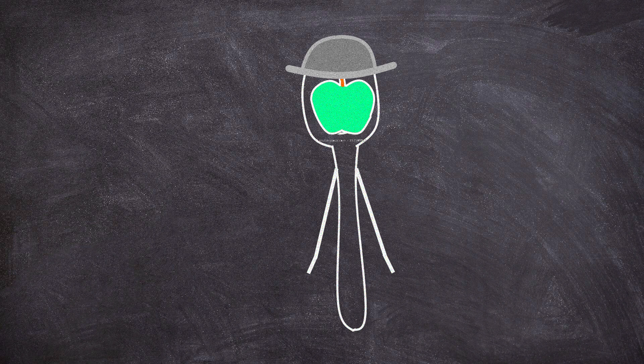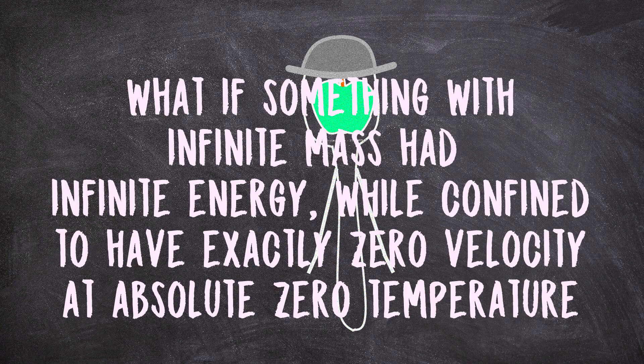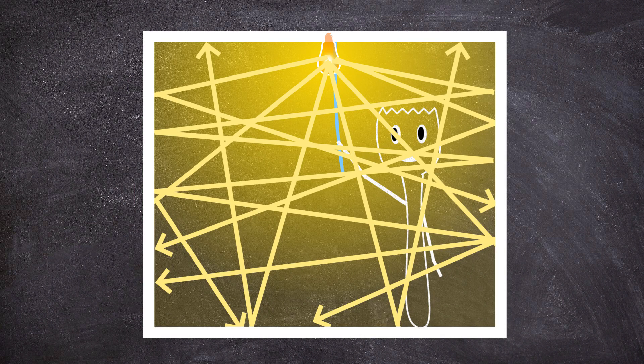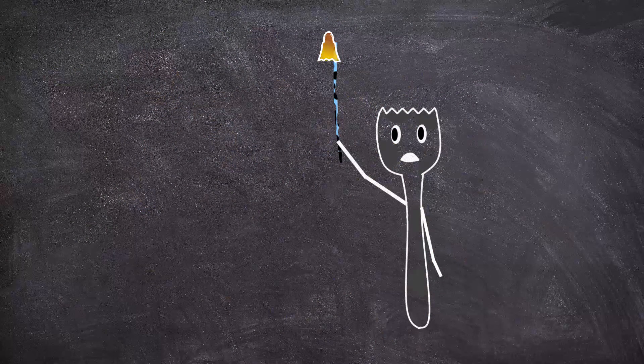Well, then things would get weird. As is often the case when you consider impossible ideals in physics. For one, if we truly had 100% reflectivity in that room, then that room would quickly explode. Why? Because of radiation pressure.